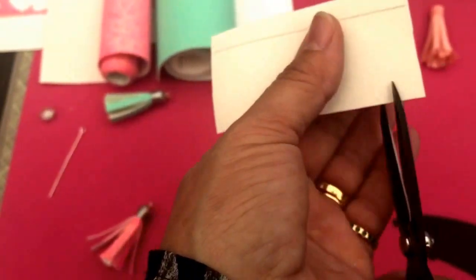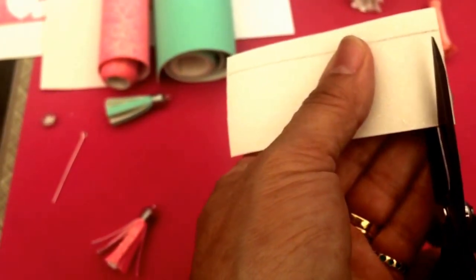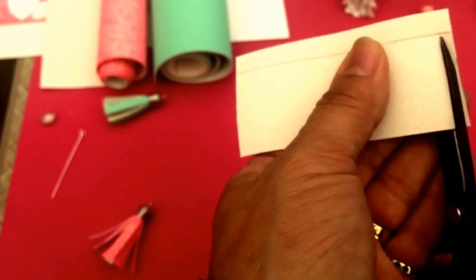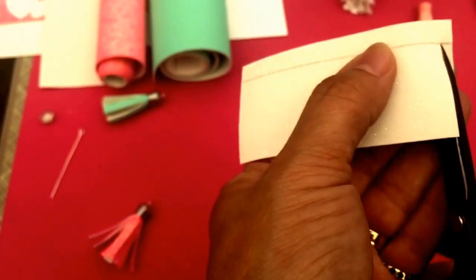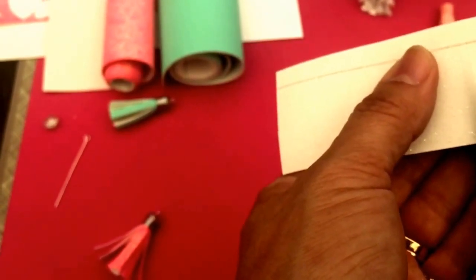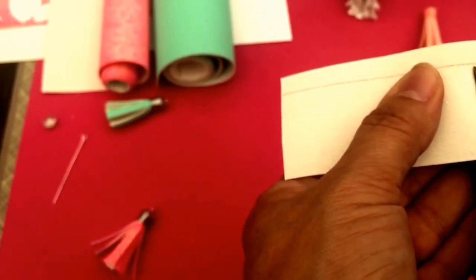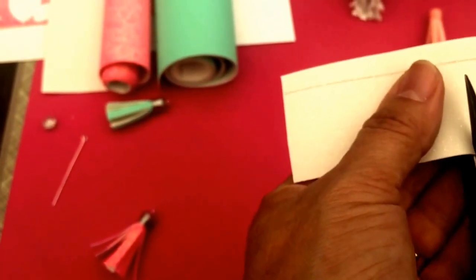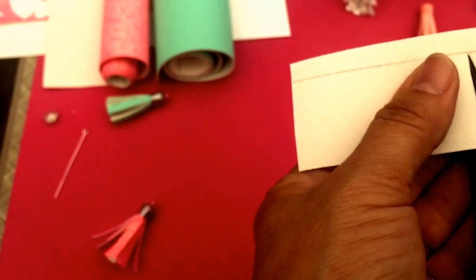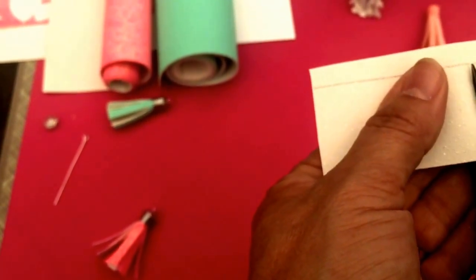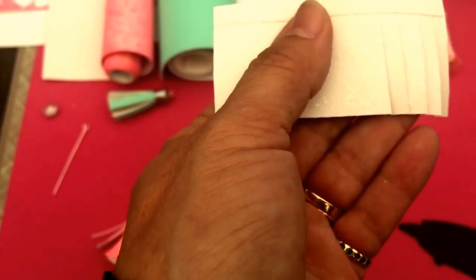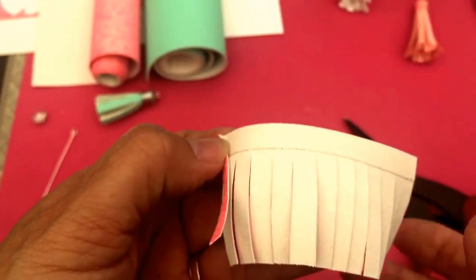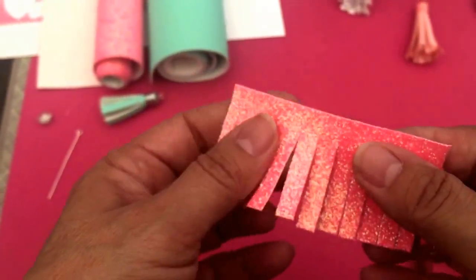So we'll get started. I'm just going to go ahead and cut small slits and you can make these whatever width you want. So I'm just going to continue on like this and then I'll come back when I've got it all cut.